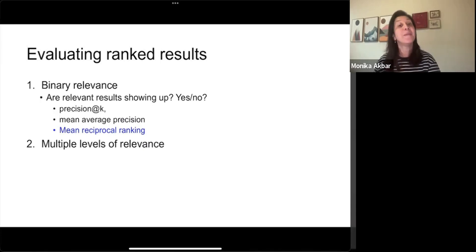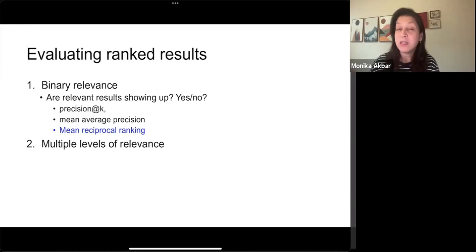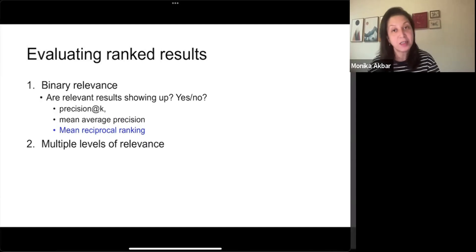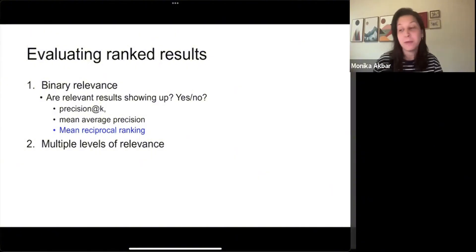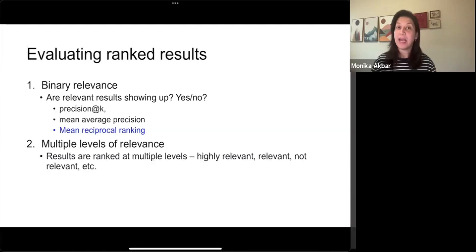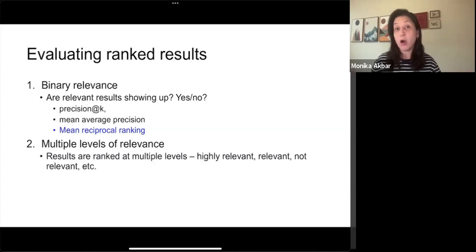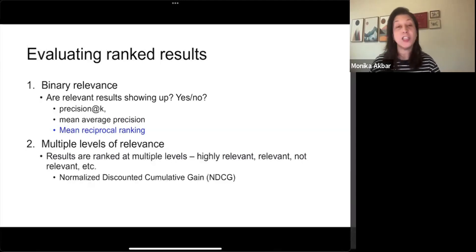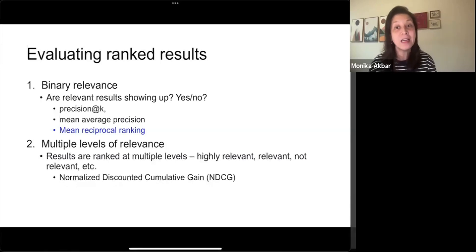Today we will look at mean reciprocal ranking. The other type of evaluation for ranked results includes multiple levels of relevance. Results are ranked at multiple levels, not just at the relevant or not relevant level. So the result can be ranked as highly relevant, relevant, somewhat relevant, or not at all relevant. A common technique for multiple levels of relevance evaluation is NDCG, which stands for Normalized Discounted Cumulative Gain. We are not covering it today, maybe some other day.